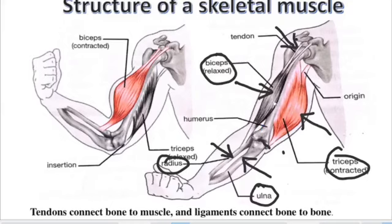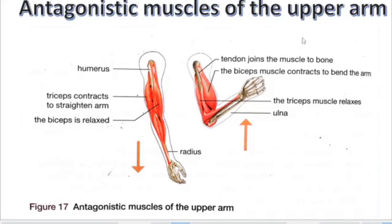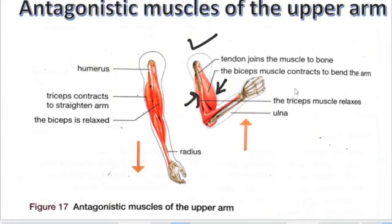The skeletal muscles — the biceps and the triceps — they work in opposite directions, for example when a person wants to straighten or bend the arm. When the arm is bent, the biceps in front contract while the triceps at the back relax. This working of muscles in opposite directions is what we call antagonistic muscles.